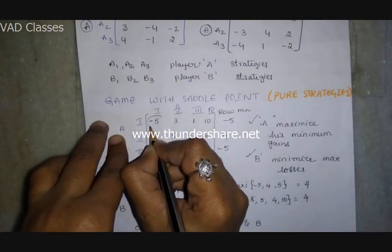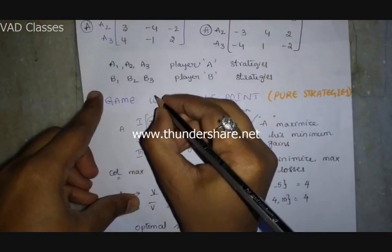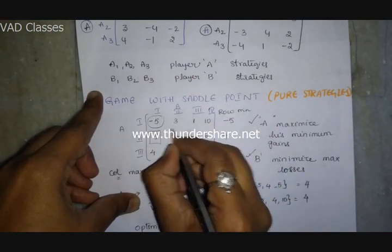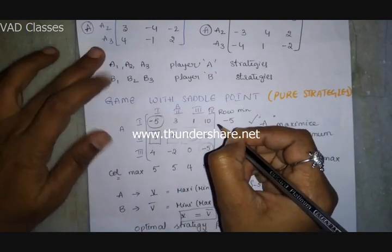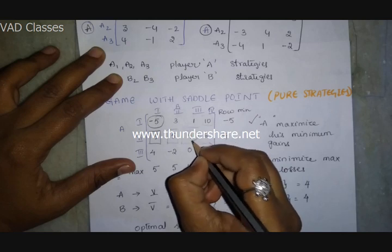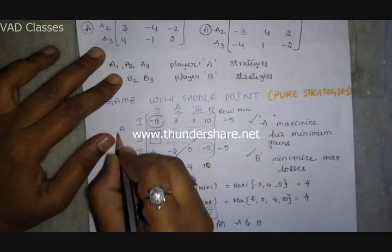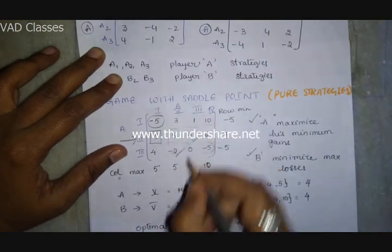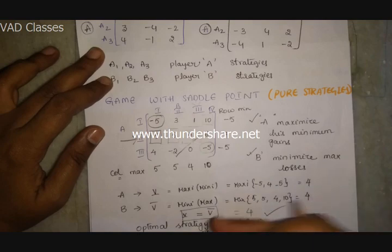Using the shortcut technique: circle the row minimums — minus five, four, minus five — and give a square box to the column maximums — five, five, four, ten. Where a circle and square intersect on the same element, that is the saddle point. Here it is the second row, third column. So player A's optimal strategy is the second row (second strategy) and player B's optimal strategy is the third strategy. The value of the game is four.